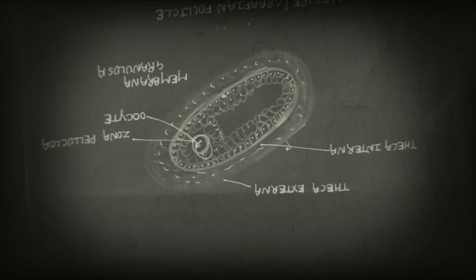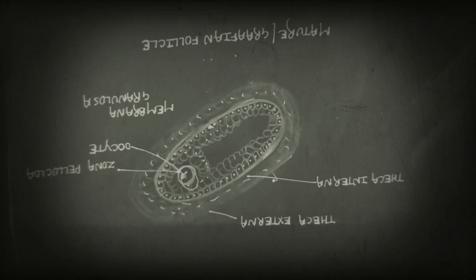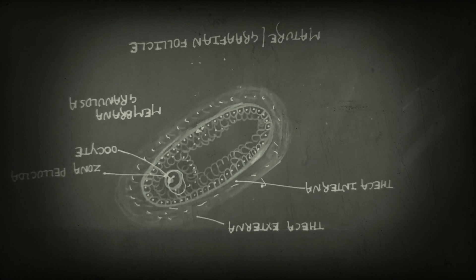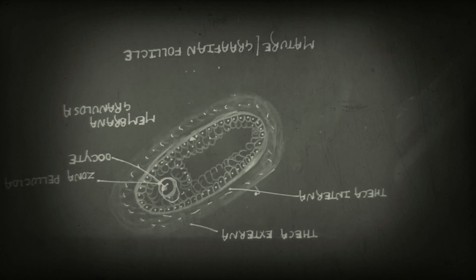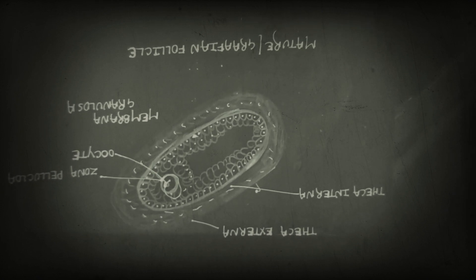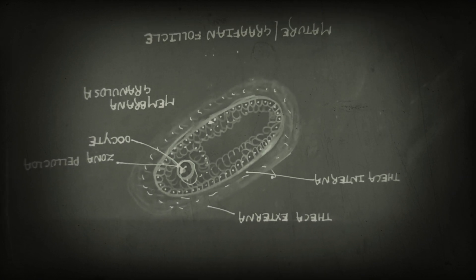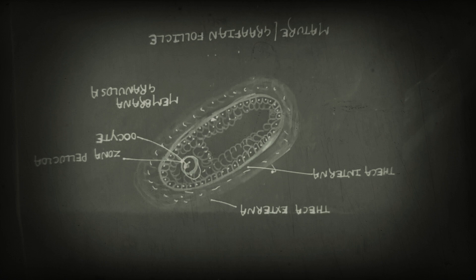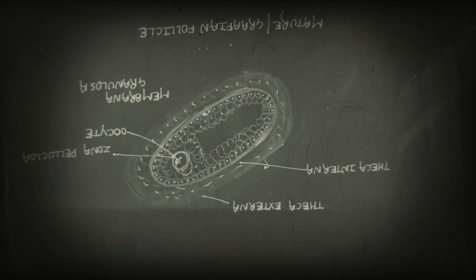Around day 15 of the menstrual cycle, when the LH surge reaches its maximum peak level, the Graafian follicle bursts and expels the ovum. This is called ovulation.